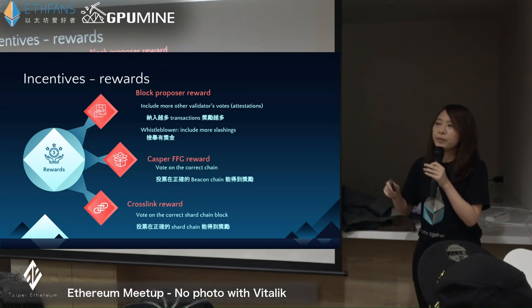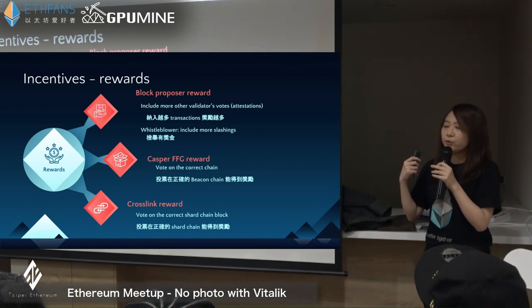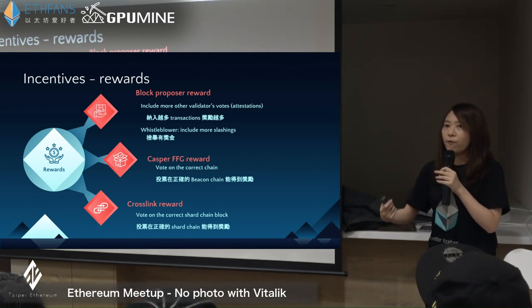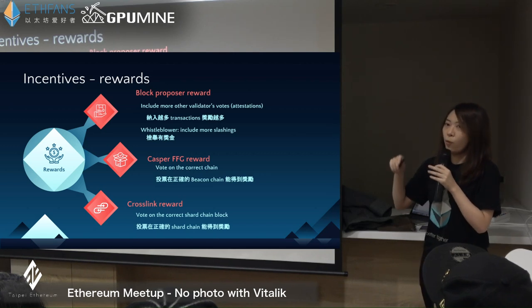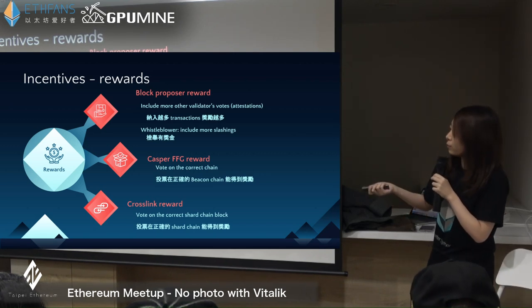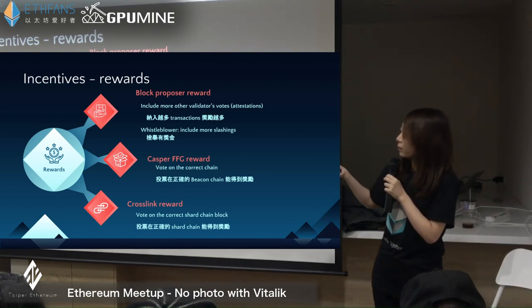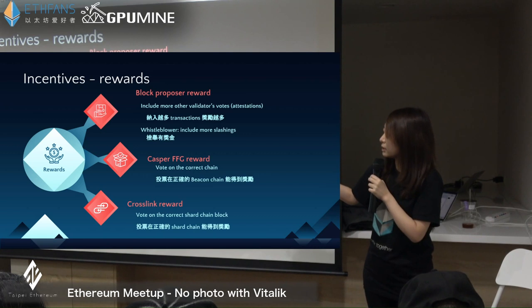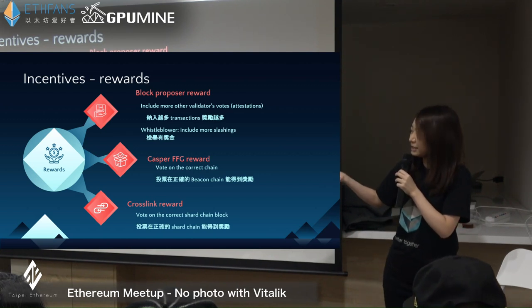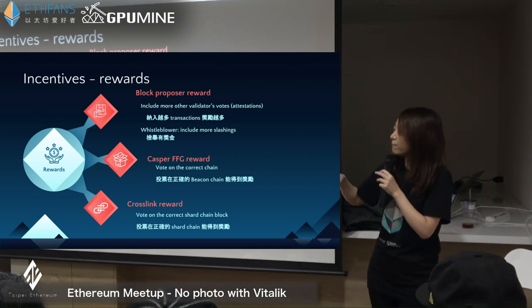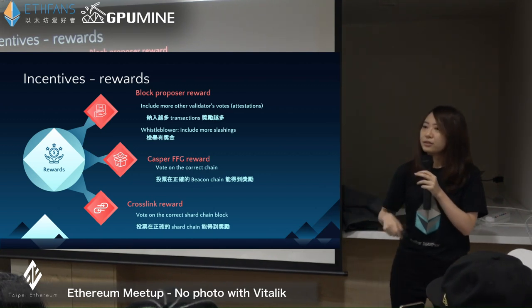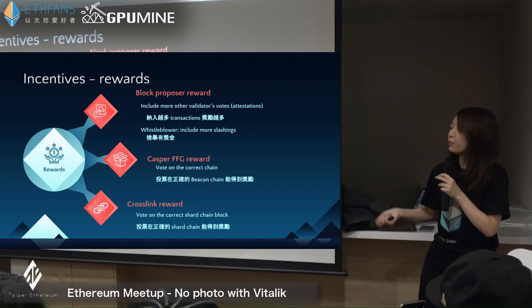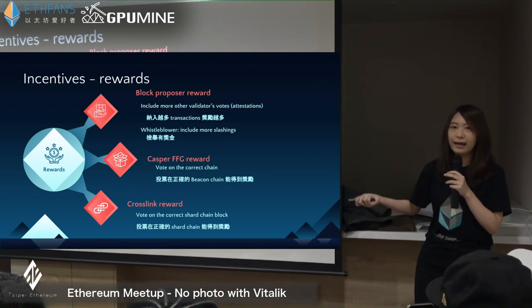The crosslink is a data structure we use to inscribe a record for some specific shard structures. Validators will be responsible for attesting one shard. They will need to earn the crosslink reward, and if that shard is really the canonical chain, they will get a reward from that.